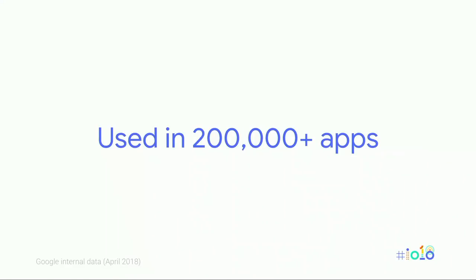That gives you consistent playback functionality across all different Android versions and across all different devices. ExoPlayer works from API 16 — that's Android Jelly Bean upwards — so you can reach more than 99% of active devices. The project is open source, hosted on GitHub, with an active community where you can file issues with feature requests, bugs, and even send pull requests.